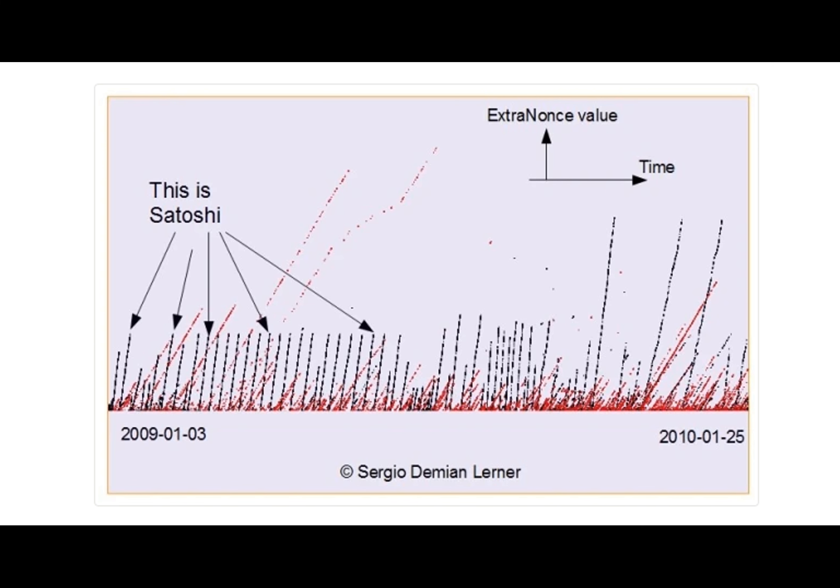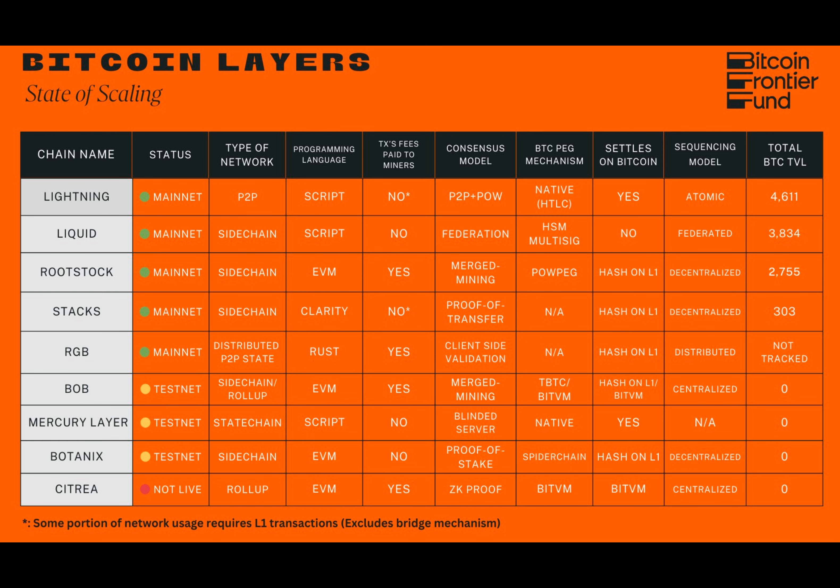Bitcoin researchers are polishing a new open-source framework called BitVMX, which promises to allow complex applications and functions to be built and executed securely on Bitcoin's base layer.